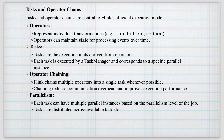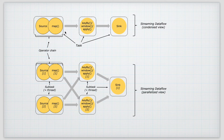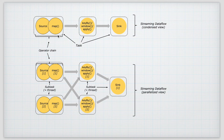Operators represent individual transformations — map, filter, reduce, and so on — and can maintain state for processing events over time. Tasks are the execution units derived from operators, with each task executed by a Task Manager corresponding to a specific parallel instance. Flink chains multiple operators into a single task whenever possible, reducing communication overhead and improving execution performance. If there is shuffling between two operations they remain separate; if there is no shuffling, they can be chained together. Flink automatically decides whether to chain operators or execute them as separate tasks.